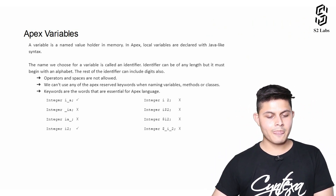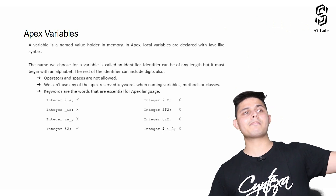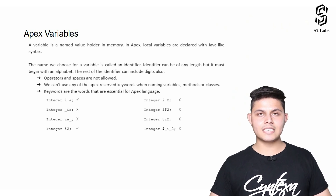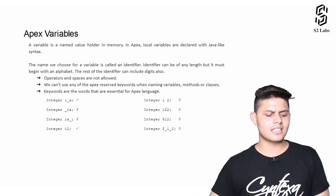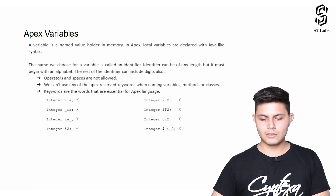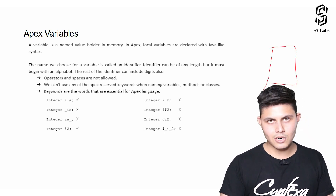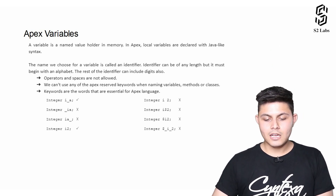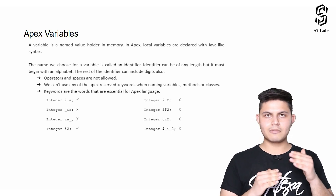Apex variables are named value holders in memory. If you want to store something in memory and refer back to it, you use a variable. In Apex, local variables are declared with Java-like syntax, similar to Java, C, or C++. The name we choose for a variable is called an identifier. An identifier can be of any length but must begin with an alphabet; the rest of the identifier can include digits as well.